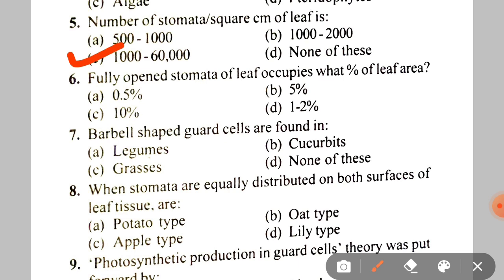Next: fully opened stomata of a leaf occupies what percent of leaf area? A. 0.5%, B. 5%, C. 10%, D. 1 to 2%. The correct answer is D — 1 to 2%.